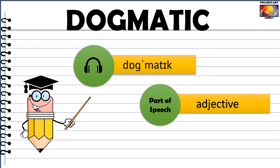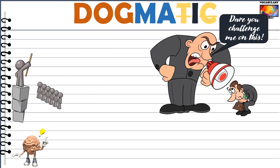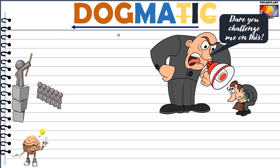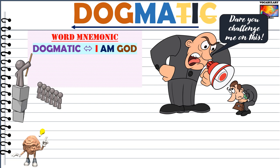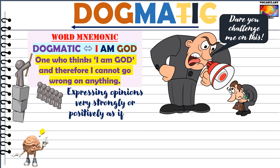Then we have the word dogmatic, which is an adjective. Dogmatic is a very common English word, used very frequently. There is an extremely simple and effective mnemonic: read the word backwards and you get the phrase 'I am God.' A dogmatic person is someone who thinks 'I am God' and therefore cannot go wrong on anything — someone who expresses opinions very strongly as if they were facts, and is very opinionated and rigid in their beliefs.